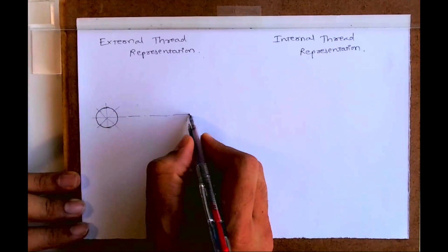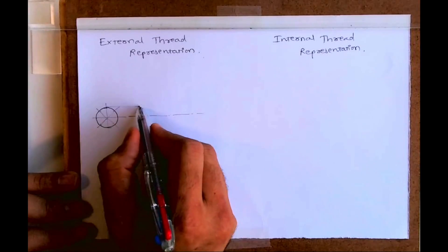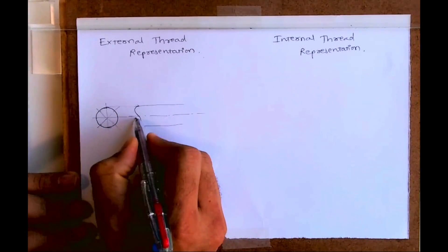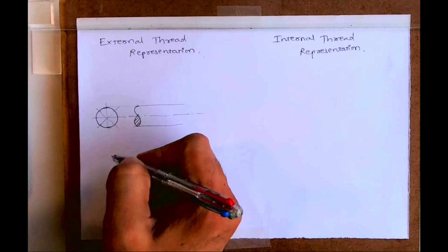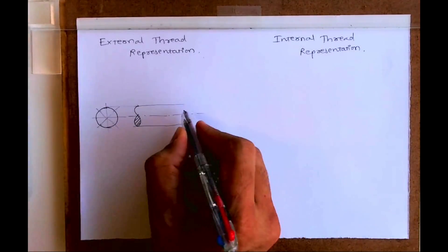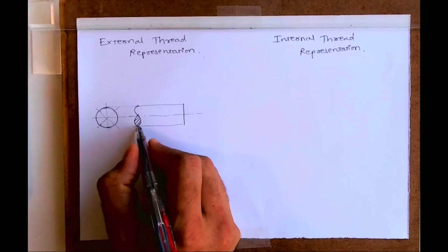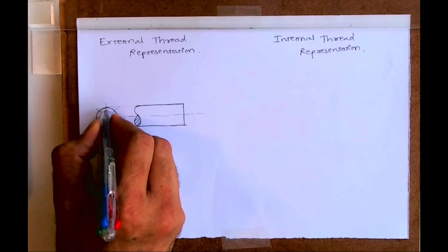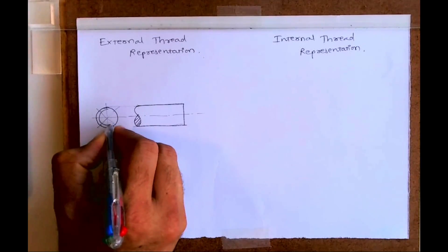For external thread, we need to draw a shaft, so I'm drawing the shaft in front view. It will be like this. This is just a plain shaft, and now when we are doing threading...